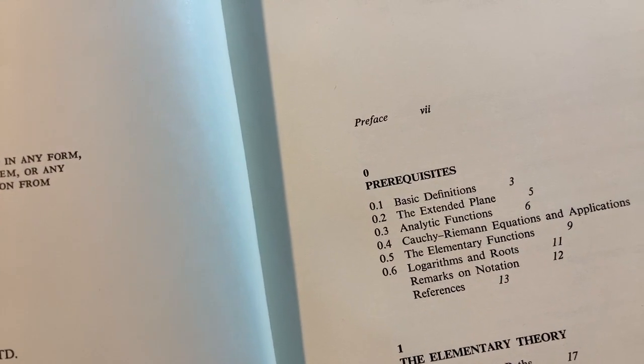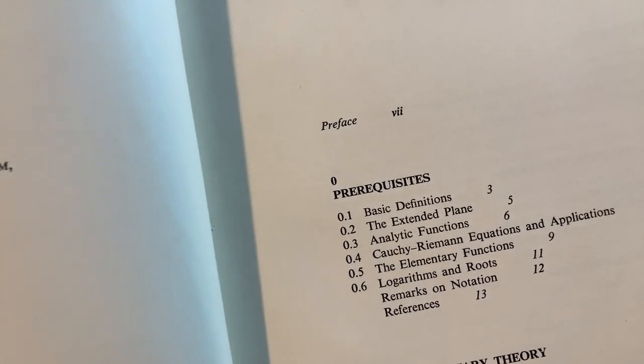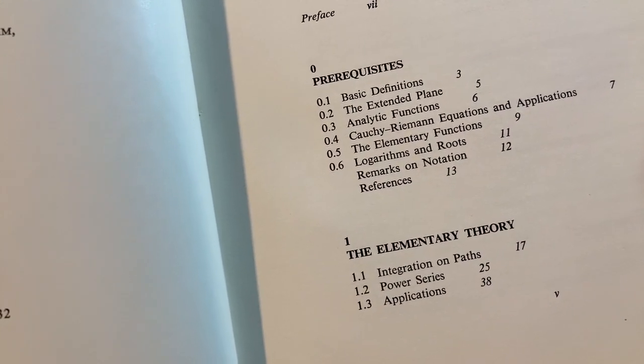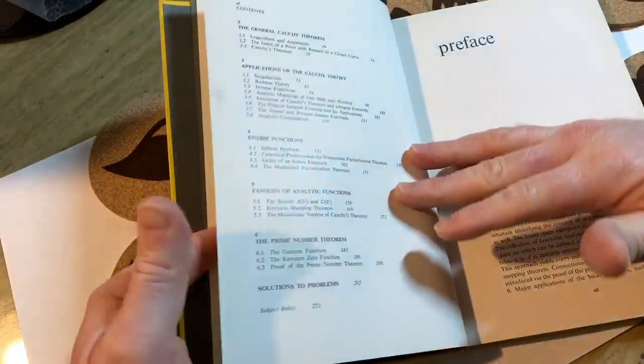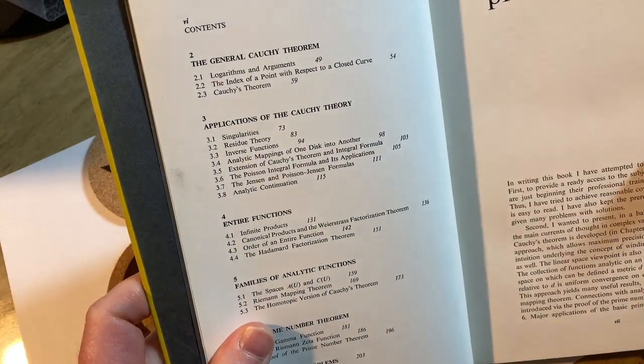Basic definitions, the extended plane, and then right away, look at that page six. You're already on analytic functions, so it doesn't waste any time. And look, already we're on integration on paths on page 17. So it's one of those books that moves pretty quickly, which means that details are going to be omitted. Examples are going to be missing or omitted.